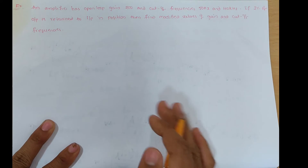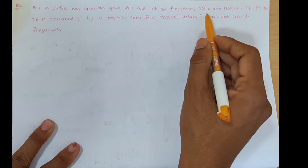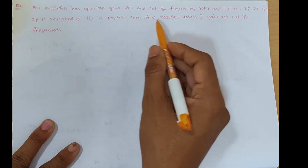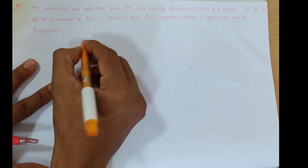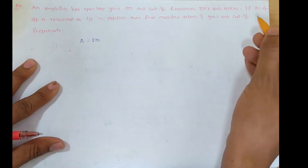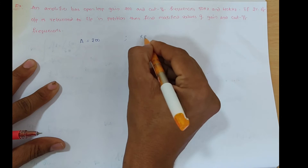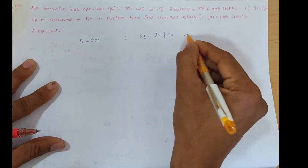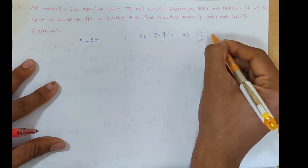Next, we solve a problem on feedback amplifiers. An amplifier has open loop gain A = 200 and cutoff frequencies 50 Hz and 40 kHz. If 2% of the output is fed back to the input in opposition, find the modified values of gain and cutoff frequencies. Here A = 200 (open loop gain). Since 2% of output is returned to input, XF = 2% of X0, so XF/X0 = 0.02.